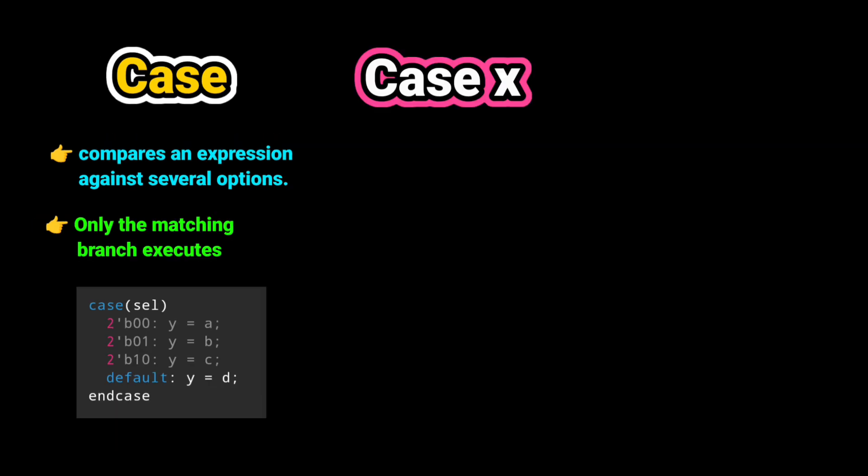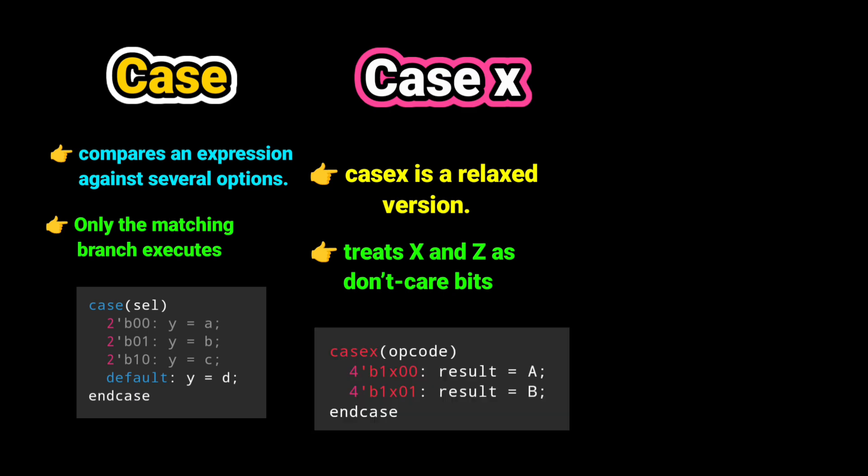Second one is CaseX. CaseX is a relaxed version. It treats X and Z as don't care bits, both in the case expression and the case items. This is the example of CaseX. It is flexible, but risky in simulation. If your signal has an unknown (X), CaseX may still match a branch and hide bugs.